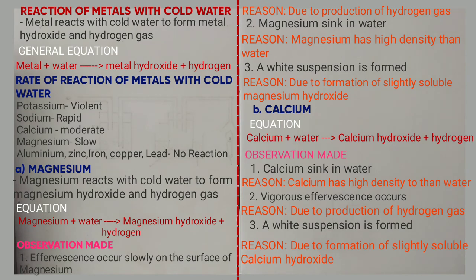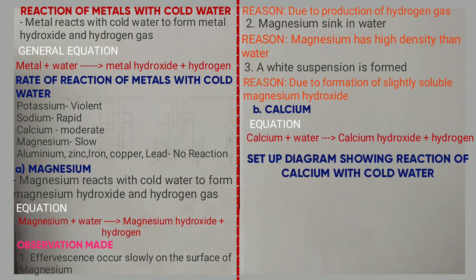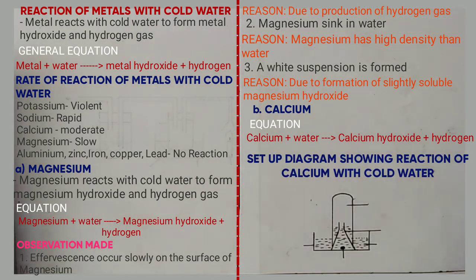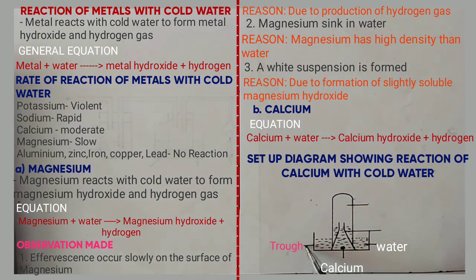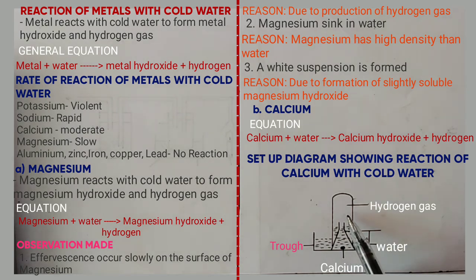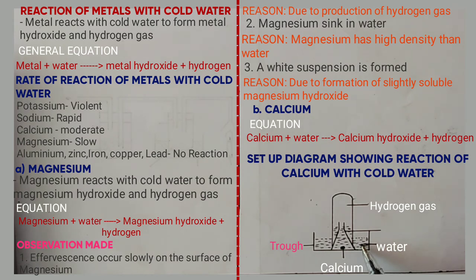The diagram below shows the reaction between calcium and cold water. Calcium sinks in water; this is the calcium metal layer, and this is water in the trough. So when calcium reacts with cold water, hydrogen gas is collected here. The solution formed at the end of the experiment is calcium hydroxide — it is a basic solution — and hydrogen gas is collected at this point.